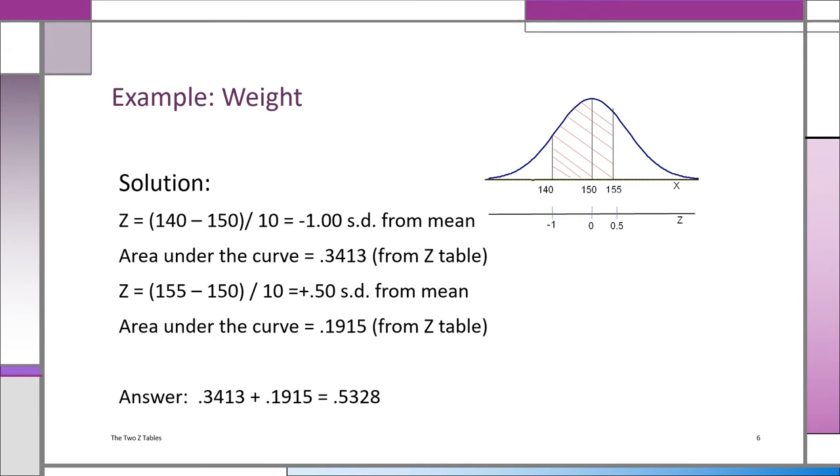Roughly 53.28% of adult men will weigh between 140 and 155 pounds. So if I ask you, what is the probability that a randomly selected adult man will weigh between 140 and 155? That's 0.5328.